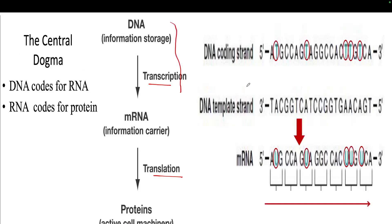There are two strands of DNA: one is the 5' to 3' direction and the other is 3' to 5' direction. The mRNA sequence is always identical to the coding strand and complementary to the template strand. Whatever mRNA sequence you get will be exactly identical to the coding sequence of the DNA, running 5' to 3'. The only difference is that in DNA there is thymine, while in mRNA there is uracil.